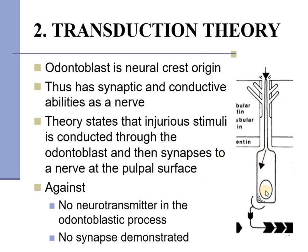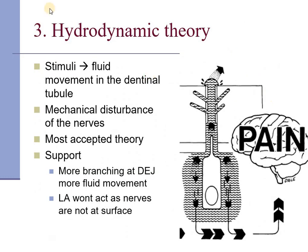The transduction theory believes that the odontoblasts, derived from neural crest cells, have a possibility of having a synapse with the nerve. The odontoblastic processes, which branch at the dentino-enamel junction, are stimulated by injury and the signal is transduced through the odontoblastic cell body to the nerve, causing stimulation. However, immunohistochemical studies have shown no neurotransmitters and no synapses demonstrated. Nevertheless, it does support the increased sensitivity at the dentino-enamel junction.